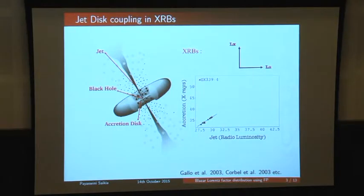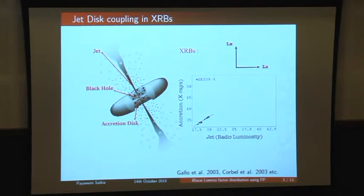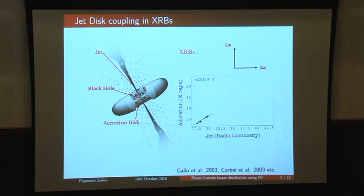In X-ray binaries, there is a very tight correlation for hard-state binaries between the X-ray luminosity and the radio luminosity. Here I'm showing the best-studied hard-state X-ray binary GX339-4. On the x-axis is jet power shown by radio luminosity, and on the y-axis is the X-ray luminosity showing accretion rate. The X-rays are in the 2–10 keV range and the radio luminosity is at 5 GHz, showing a tight disk–jet coupling.